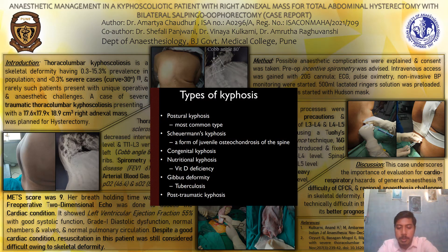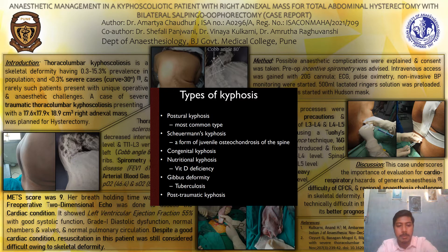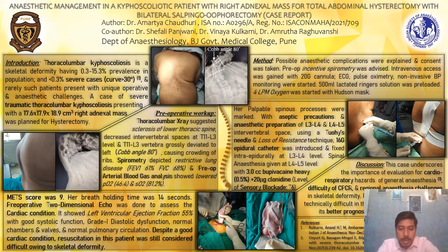Kyphoscoliosis has many etiopathogeneses, with idiopathic and congenital kyphoscoliosis being the two most common. Post-traumatic accounts for less than 1% of kyphoscoliotic patients. Kyphoscoliosis is also more common in women, affecting almost twice the number of men, and it is also more common on the right side.